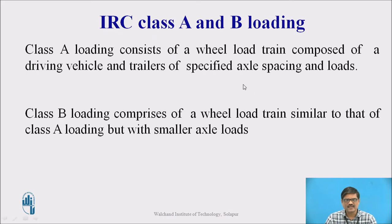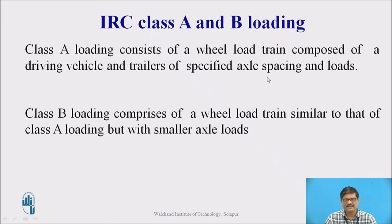Next are IRC class A and class B loading. These loadings are wheeled systems only — there is no tracked system in this case. Class A loading consists of a train composed of a driving vehicle and trailers of specified axle spacing and loads. Class B is similar to class A, but only the magnitude of the load is different.